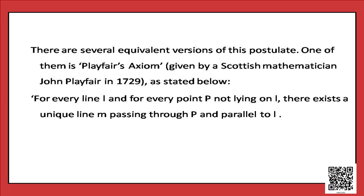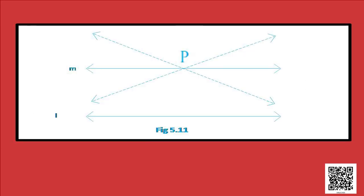Playfair's axiom states that for every line L and for every point P not lying on L, there exists a unique line M passing through P and parallel to L. All other lines passing through point P intersect line L, but only line M is parallel to L because both line L and M are equidistant from each other throughout.